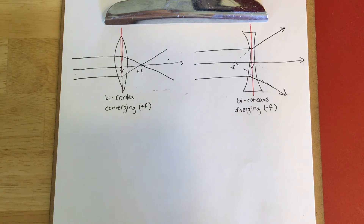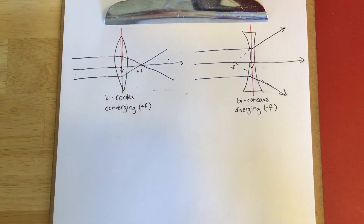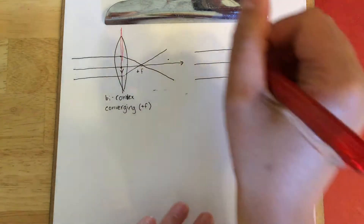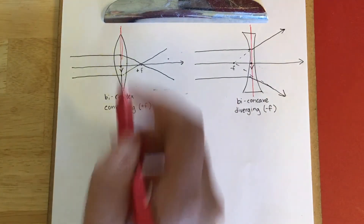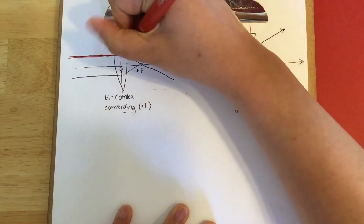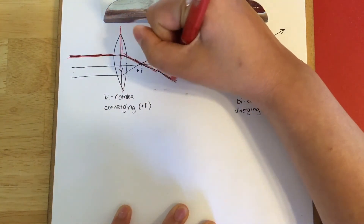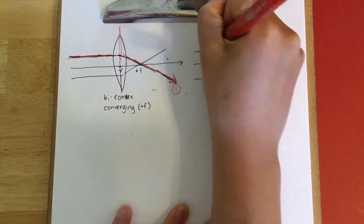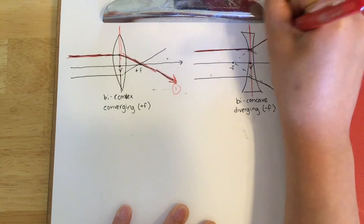Ray diagrams can be a little bit difficult to do virtually since you're at home and probably not using rulers, so I'm going to show you how I draw them. For a converging lens, ray number one goes parallel into the lens and then converges towards the focal point. For a diverging lens, ray number one diverges away from the focal point.